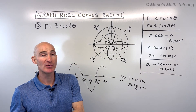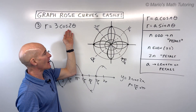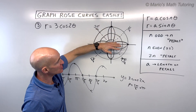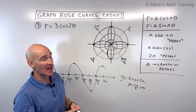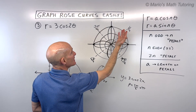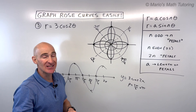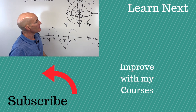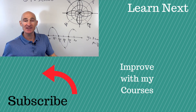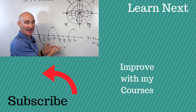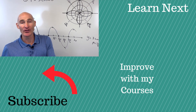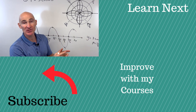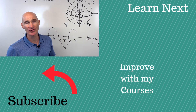One thing to note is symmetry: cosine graphs are symmetric about the polar axis, which is the x-axis. Sine graphs have symmetry about the line θ = π/2. There can be additional symmetry and other tests you can do, but the main takeaway is how to graph rose curves quickly by drawing in the Cartesian plane first. I hope that helps — I'll put a link to a video about limaçons if you want to learn about other polar graphs.